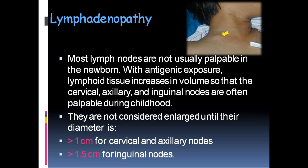Lymphadenopathy: most lymph nodes are not usually palpable in the newborn. With antigen exposure over years, lymphoid tissue increases so that cervical, axillary, and inguinal nodes are often palpable during childhood. They are not considered enlarged until their diameter is more than 1 centimetre for cervical and axillary nodes, and more than 1.5 centimetres for inguinal nodes — only then is it considered lymphadenopathy.